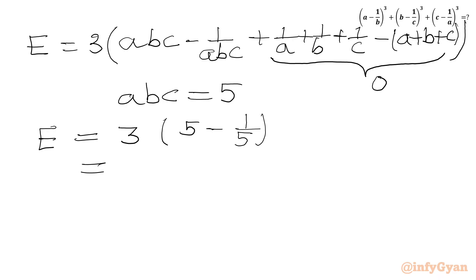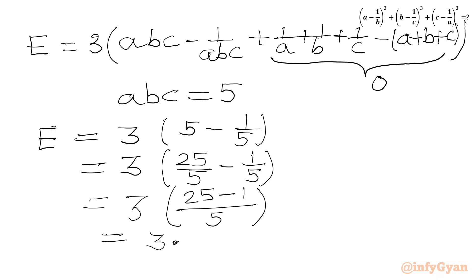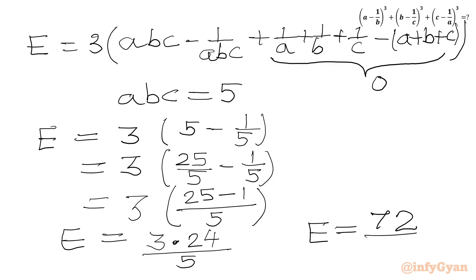Now simplifying: 5 can be written as 25/5, so 25/5 minus 1/5 gives 24/5. Therefore E equals 3 times 24/5, and our final answer is 72/5.